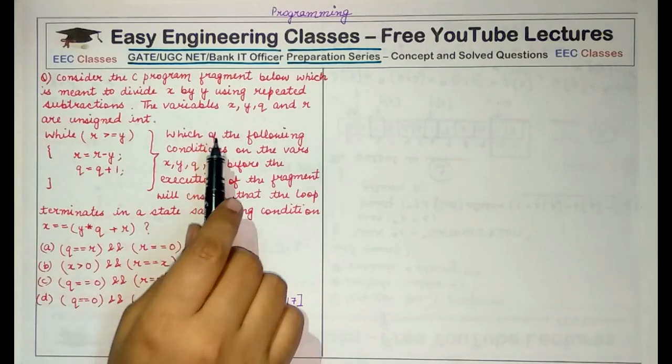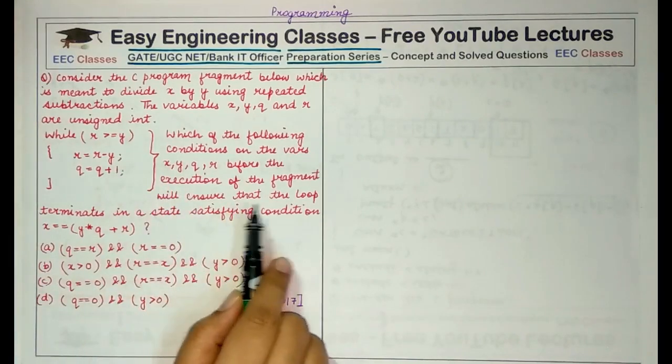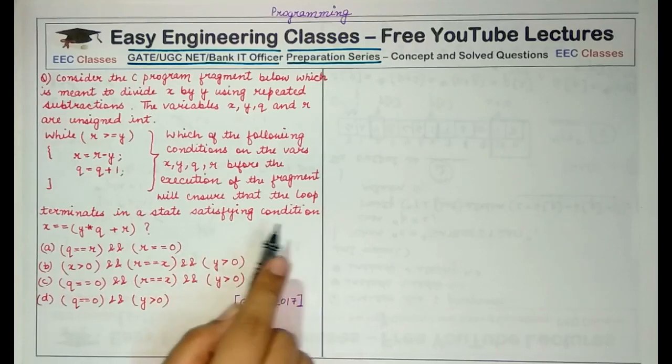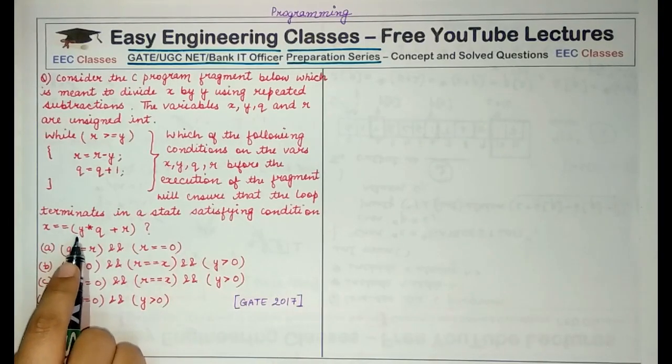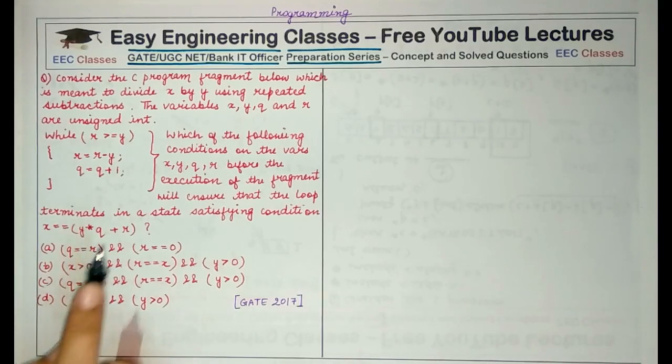So you have to tell which of the following conditions on the variables X, Y, Q and R before the execution of this fragment will ensure that the loop terminates in a state satisfying the condition X equal to Y multiplied by Q plus R.